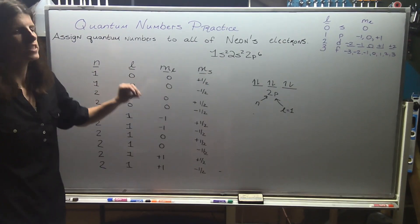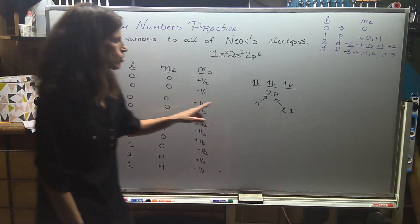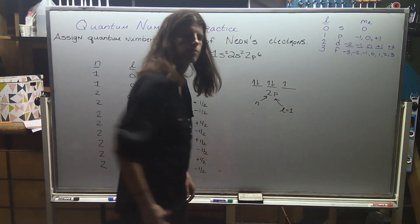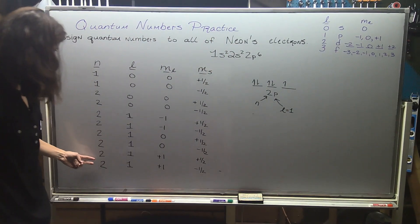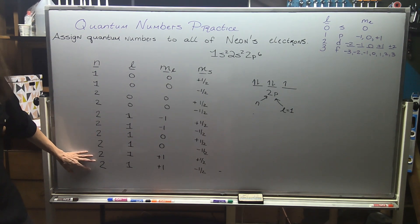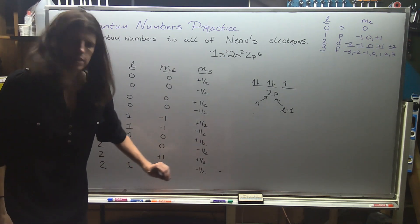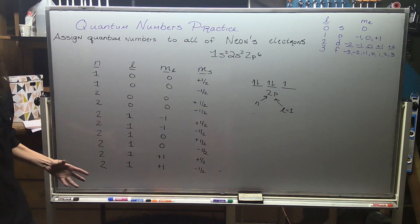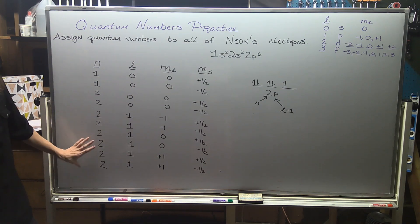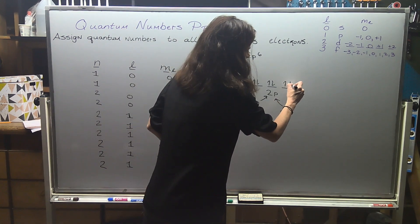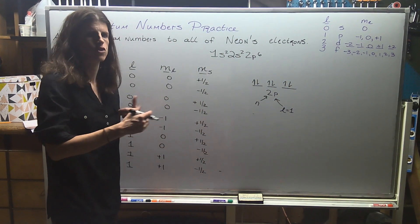If the subshell wasn't completely full — say one of those electrons wasn't there — you have a choice: you can eliminate any one of those six lines. You don't necessarily have to eliminate the last line because we don't exactly know where that electron is, per Heisenberg. So you have some flexibility when you don't have a full subshell.